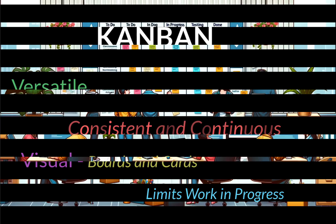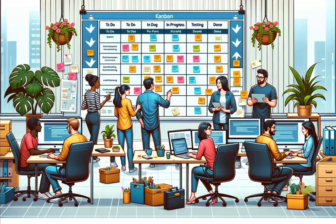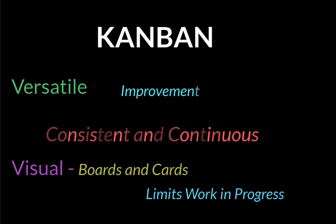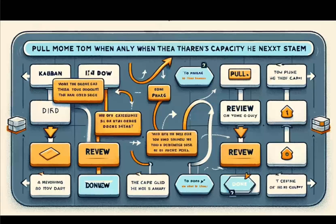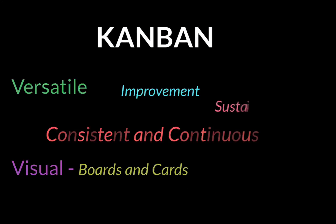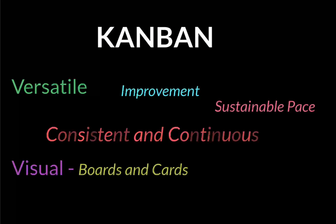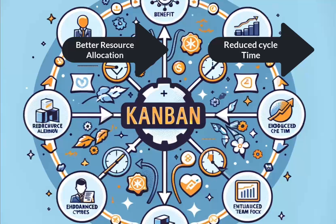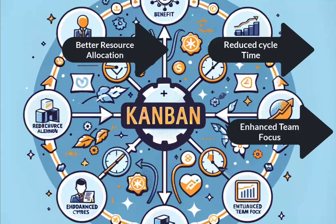Kanban's nature makes it particularly good for environments where priorities shift rapidly — for example, receiving a severity one issue. Additionally, Kanban promotes continuous delivery and improvement by allowing work items to be pulled as capacity permits rather than being pushed into the process when it's not ready. This ensures a sustainable pace and quality of work. Teams that implement Kanban can benefit from better resource allocation, reduced cycle times, and enhanced team focus.